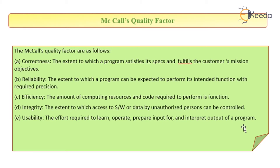Integrity: the extent to which access to software or data by unauthorized persons can be controlled. Integrity is a very important term in software security. The data accessed by users should be modified only by legitimate ones and not by any unauthorized person. The data should remain intact. For example, in an ATM system, all transactions have to be correctly recorded, and if there is a failure in any transaction, it must be rolled back to the previous transaction. That ensures the integrity of a software.